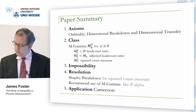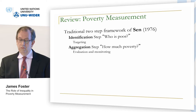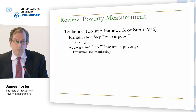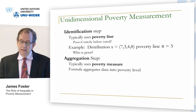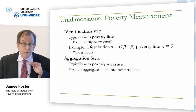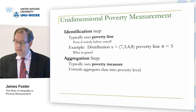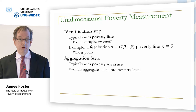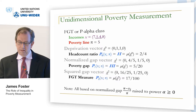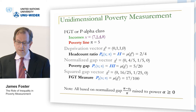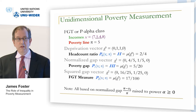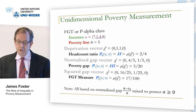Let's go to a review of poverty measurement quickly. The two-step approach of SEND: identification and aggregation. In the unidimensional approach, the identification step is usually from a particular cutoff called the poverty line. The aggregation step is conducted through a poverty measure that aggregates data into an overall level of poverty. You may have seen this class of measures — the FGT or P-alpha class — obtained by looking at the means of vectors. The first vector is the deprivation vector, which classifies who's poor: one if you're poor, zero if you're not.